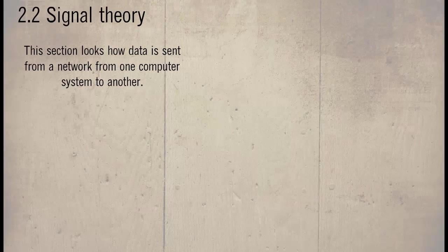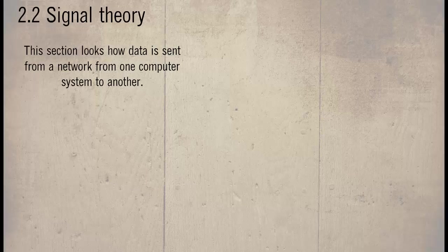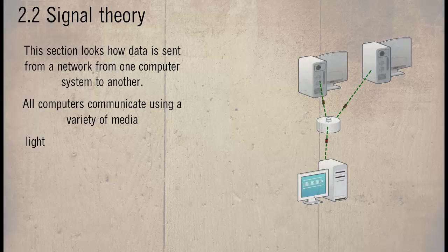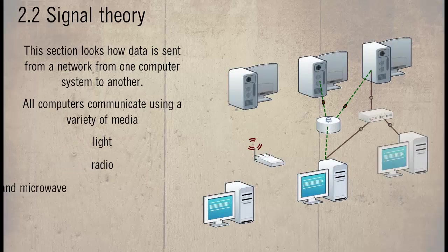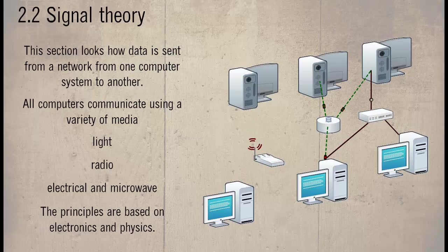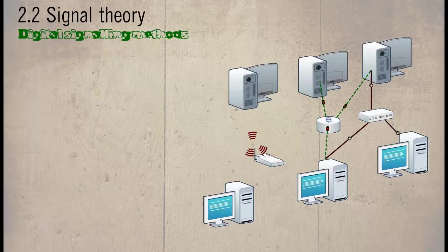This section looks at how data is sent across a network from one computer system to another. All computers communicate using a variety of media like radio, electrical and microwave. The principles are based on electronics and physics.